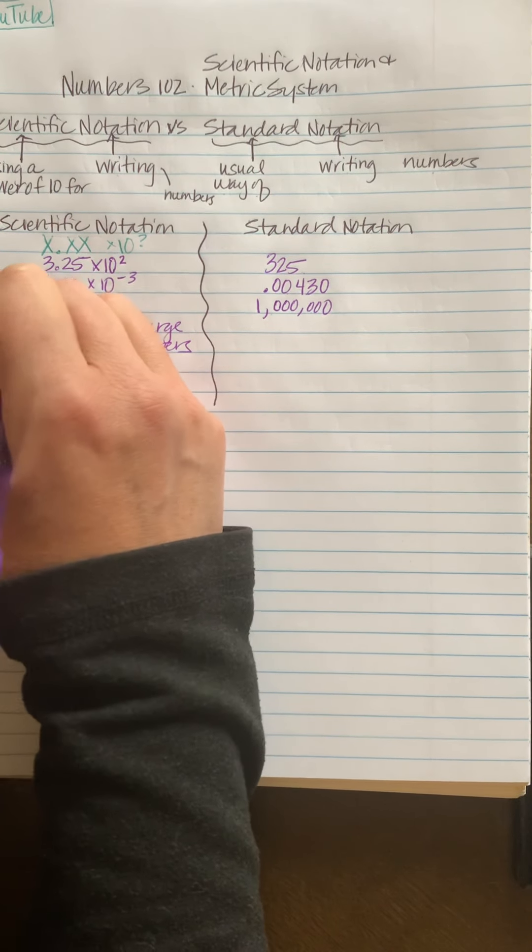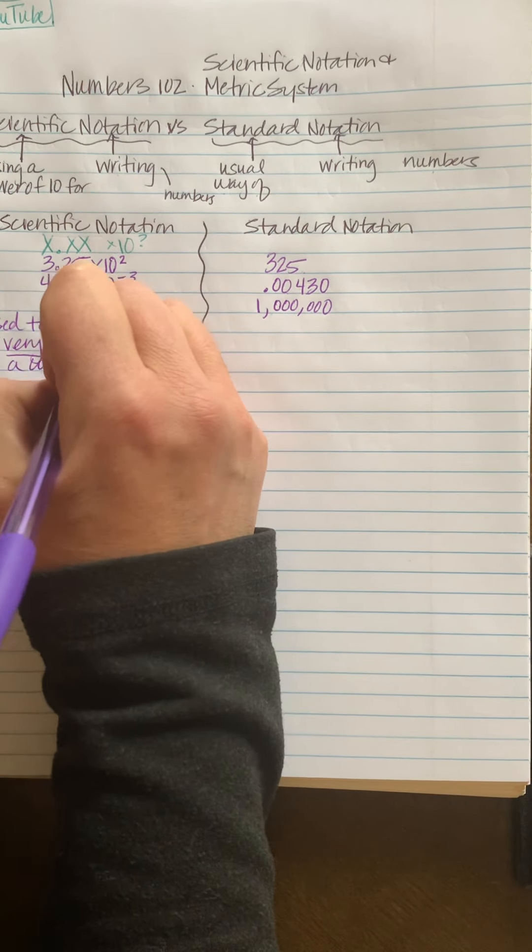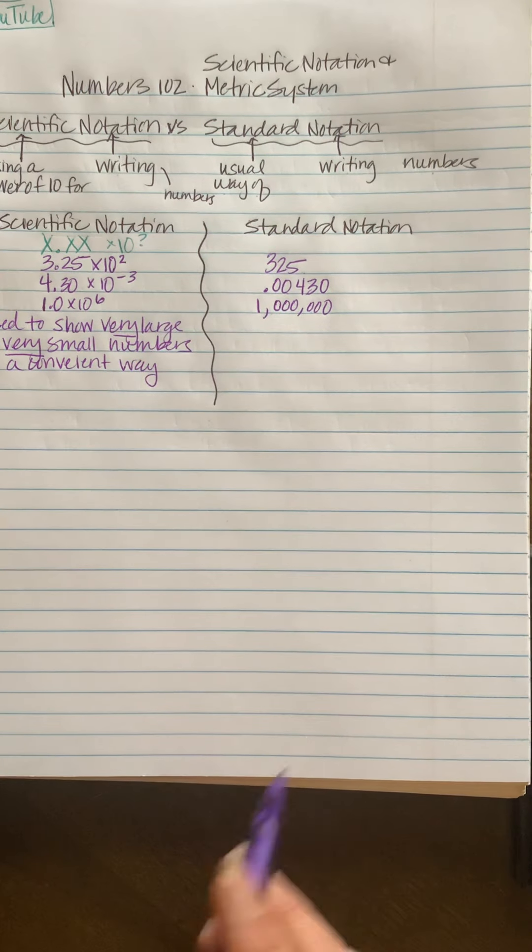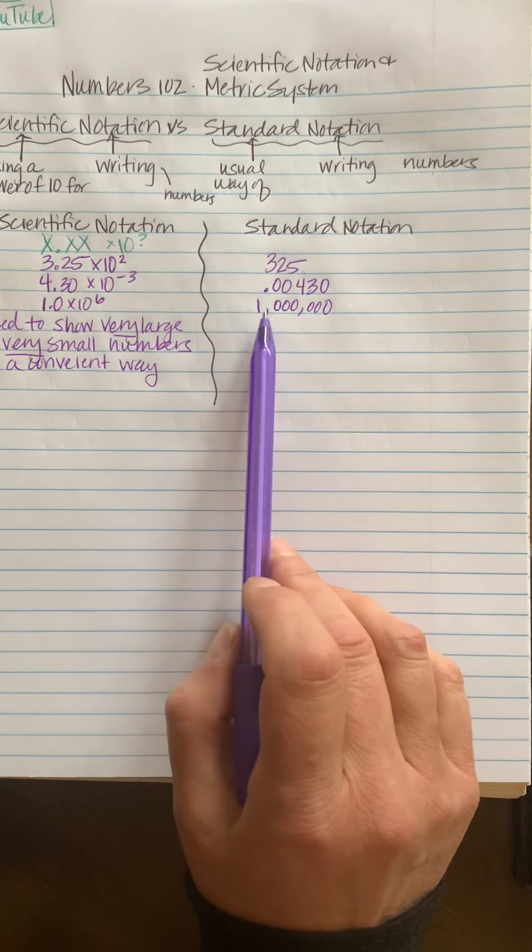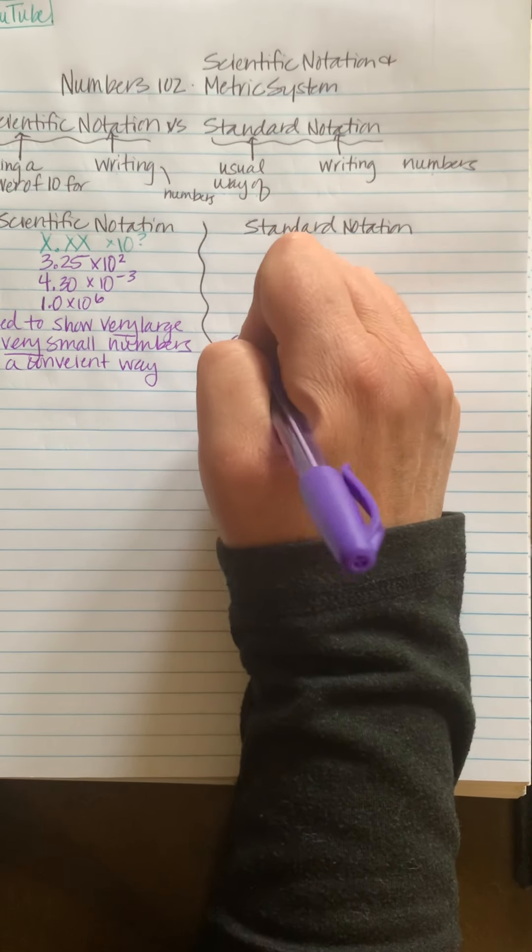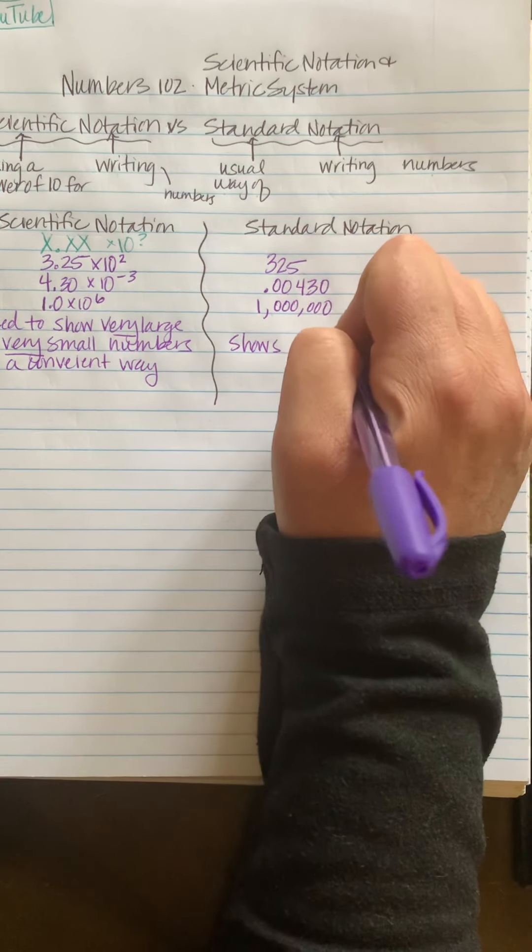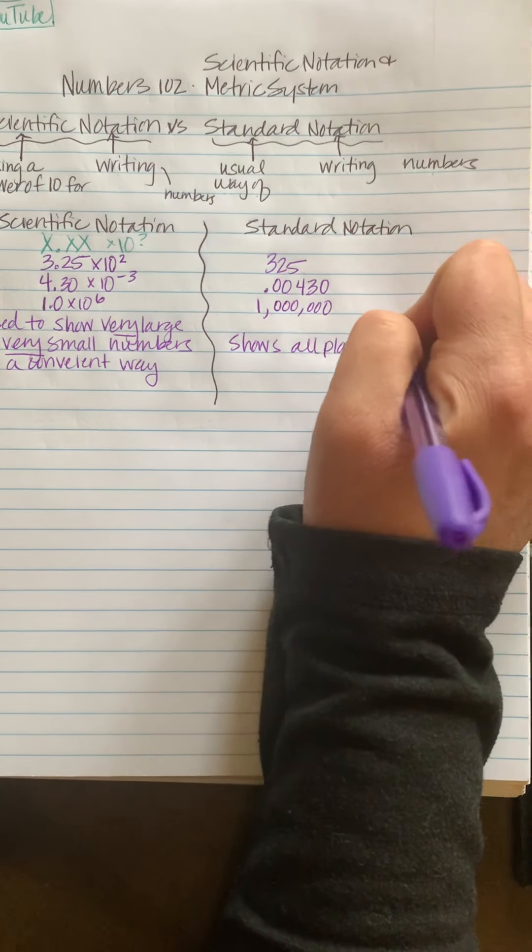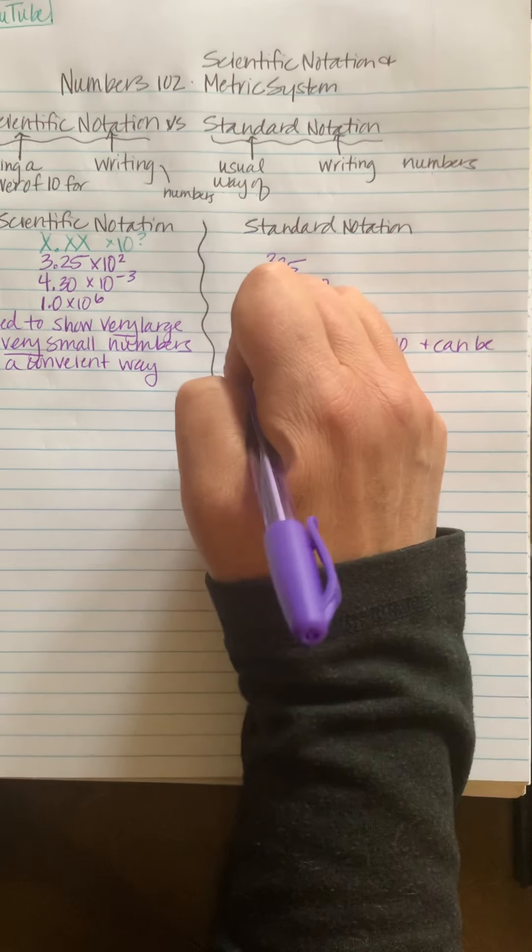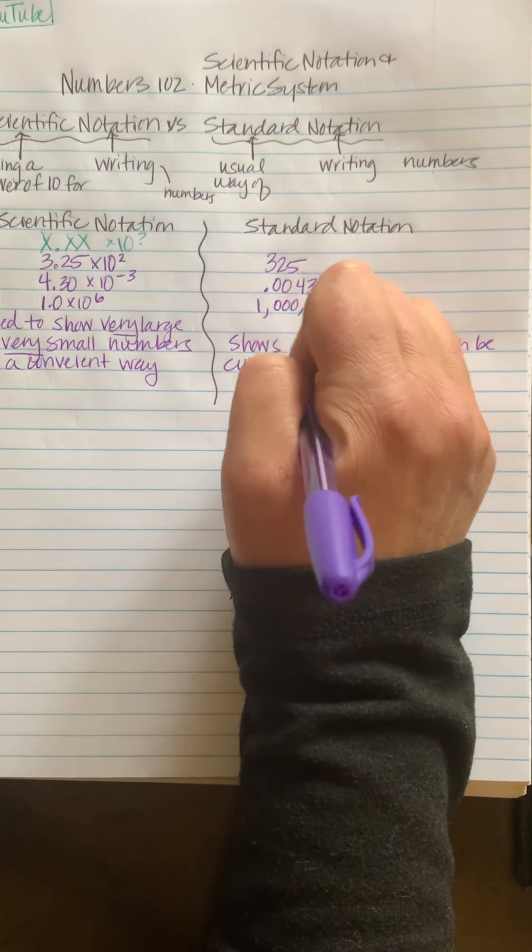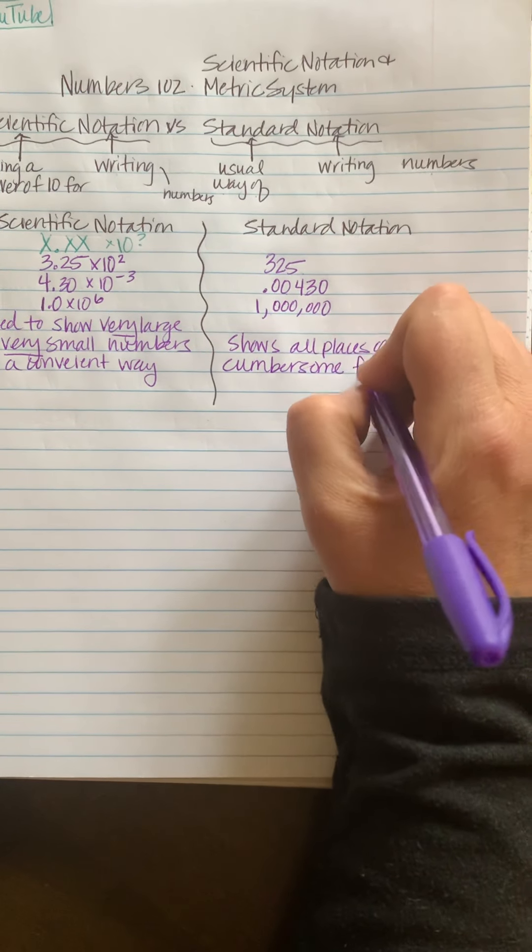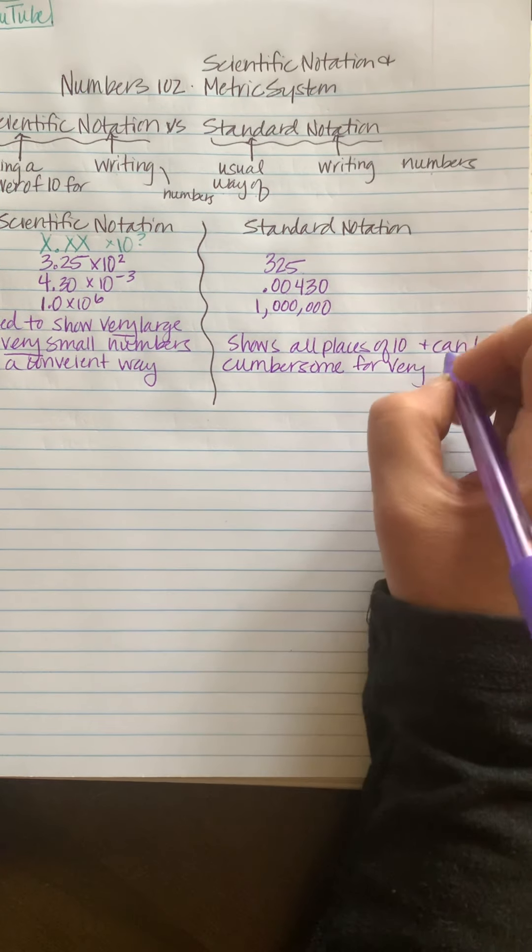So scientific notation is generally used to show very large or very small numbers just in a convenient way and can be cumbersome for very large or very small numbers.